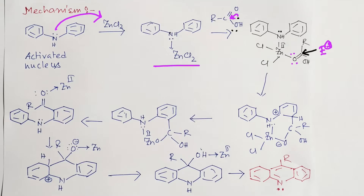There are two possible positions — ortho or para — but because of the zinc chelation, the ortho position and the carbonyl oxygen come closer together. Numbering 1–6, a six-membered ring formation is possible due to chelation — this relates to the directed ortho-metalation concept. The carbonyl double bond acts as the electrophile and attacks the ortho position, forming a six-membered ring. The positive charge generated is neutralized by the nitrogen lone pair conjugation.